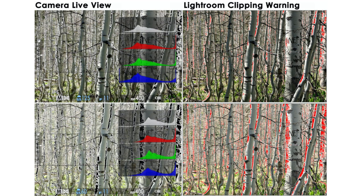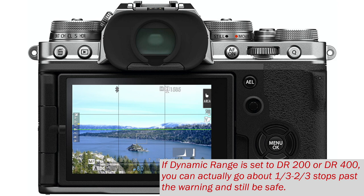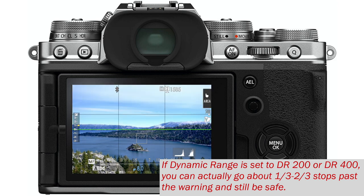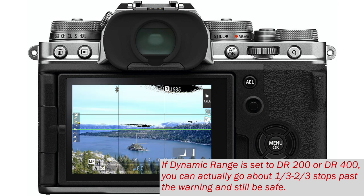When you see those blinking areas, those areas are indeed pure white or pretty close to it. There's not a buffer area like in Sony cameras, where you get the warning before the highlights are blown out. In Fujifilm cameras, that happens at an RGB value of 255, or pure white. So once you see those, if you don't want those areas to appear pure white, just bring your exposure back down until they disappear — unless you are intentionally overexposing those areas.